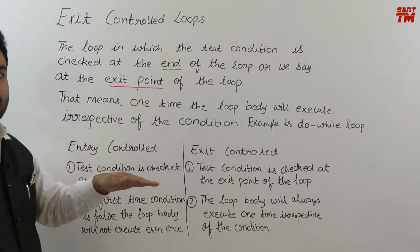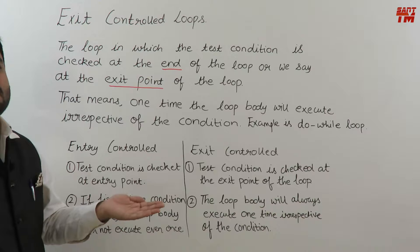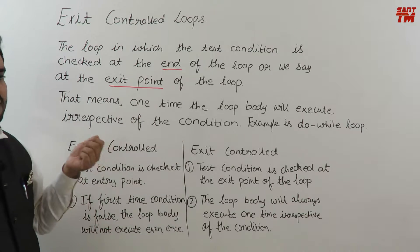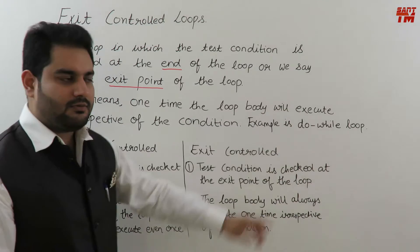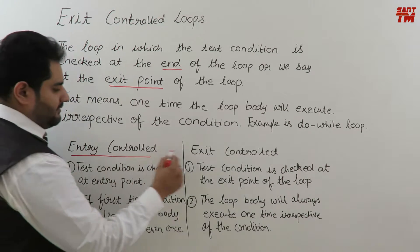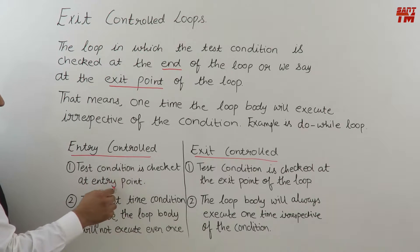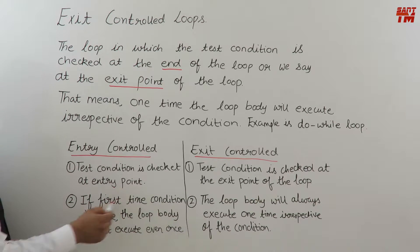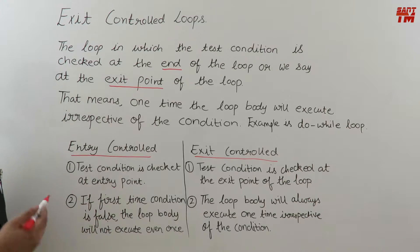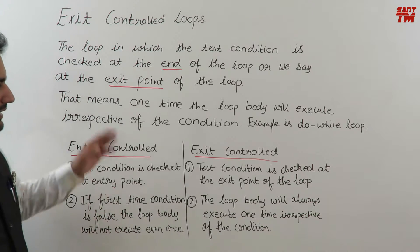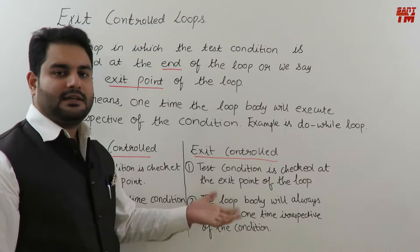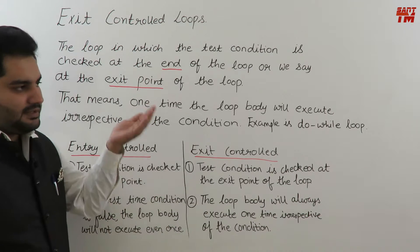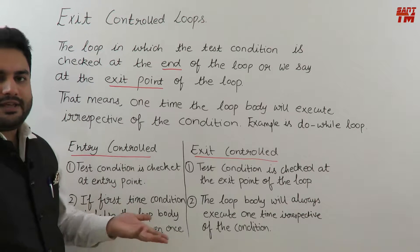Coming from top to down, the body of the loop will execute first, and then the test condition will come. So there is no point checking the test condition before — we check it at the last only. That's why one time the body of the loop will execute irrespective of the condition. In entry control loops, if the condition is false the first time, the loop body will not execute even once. But in exit control, the loop body always executes one time because there is no condition restricting it initially.